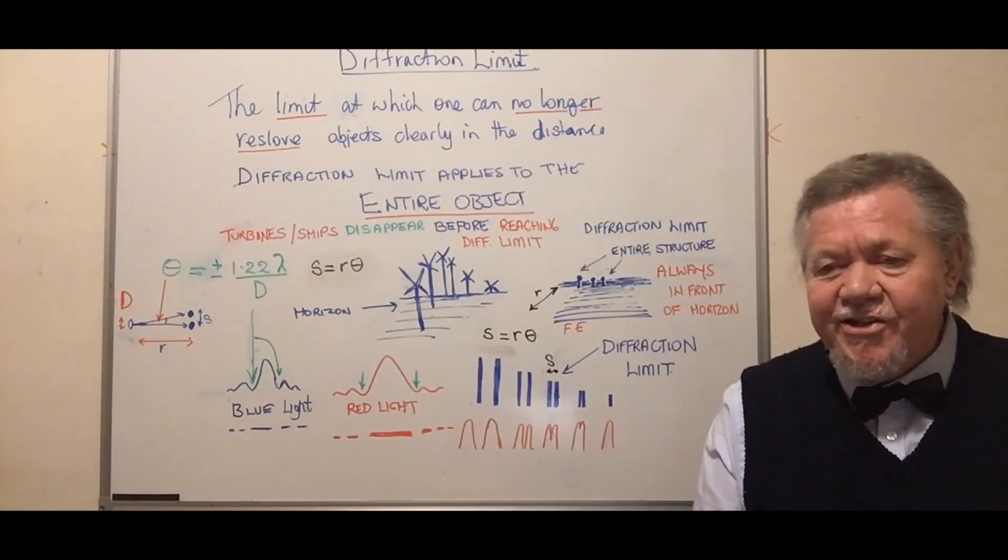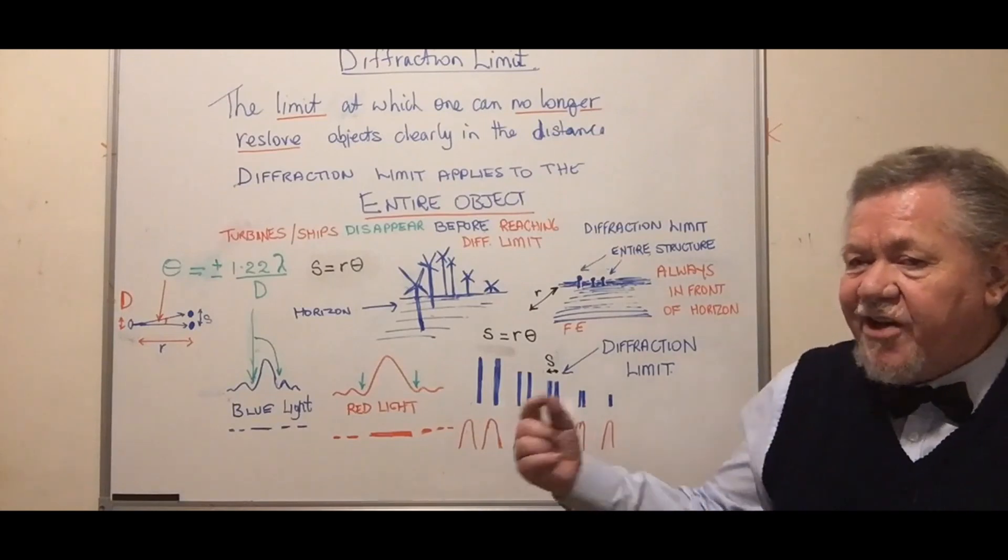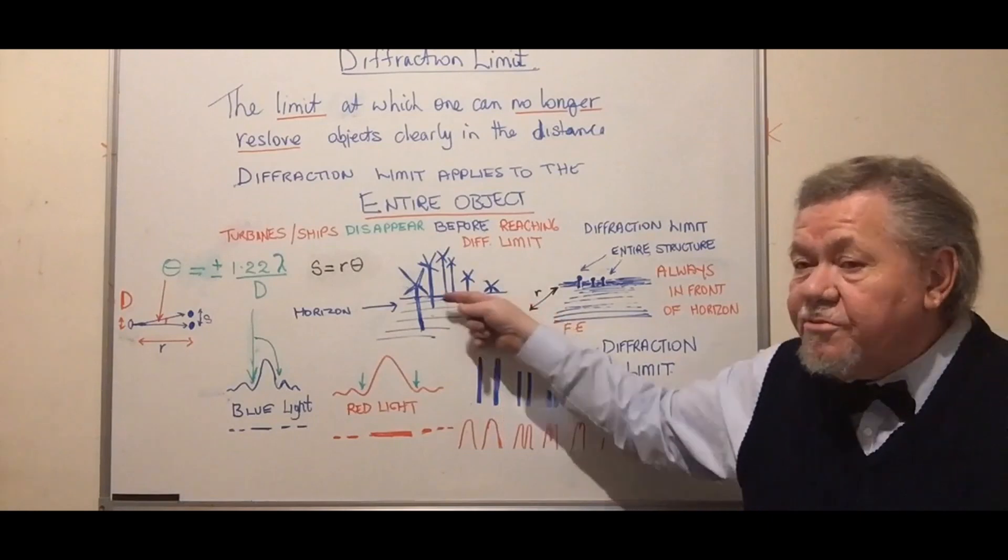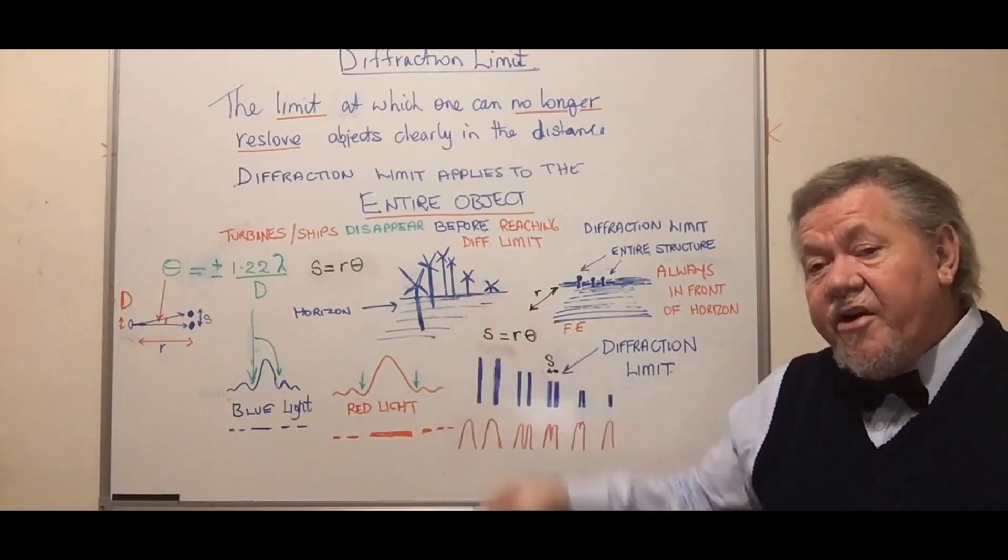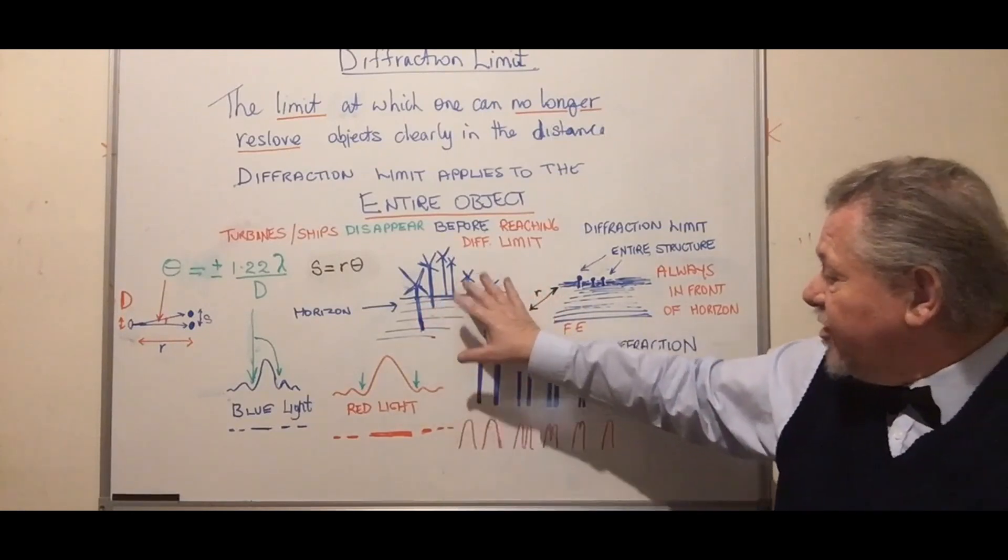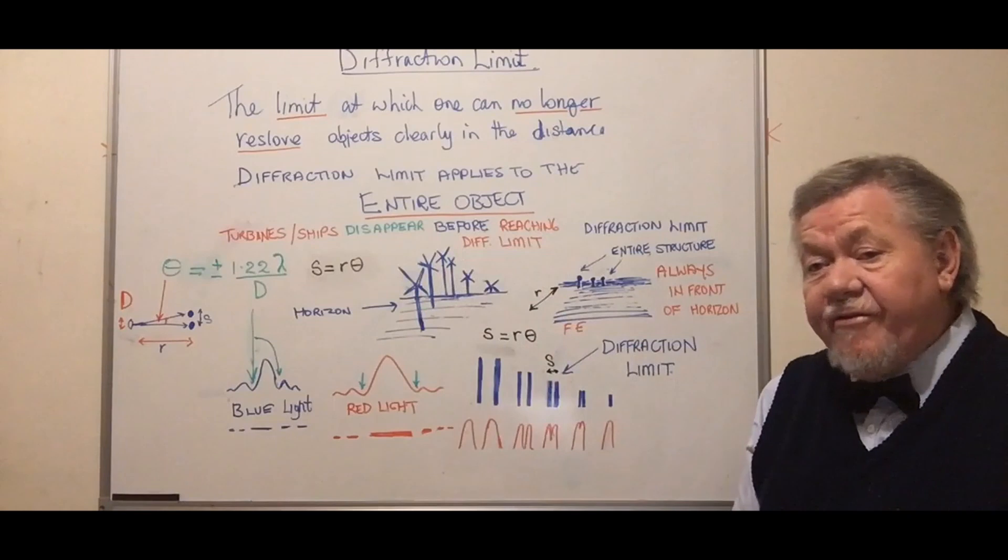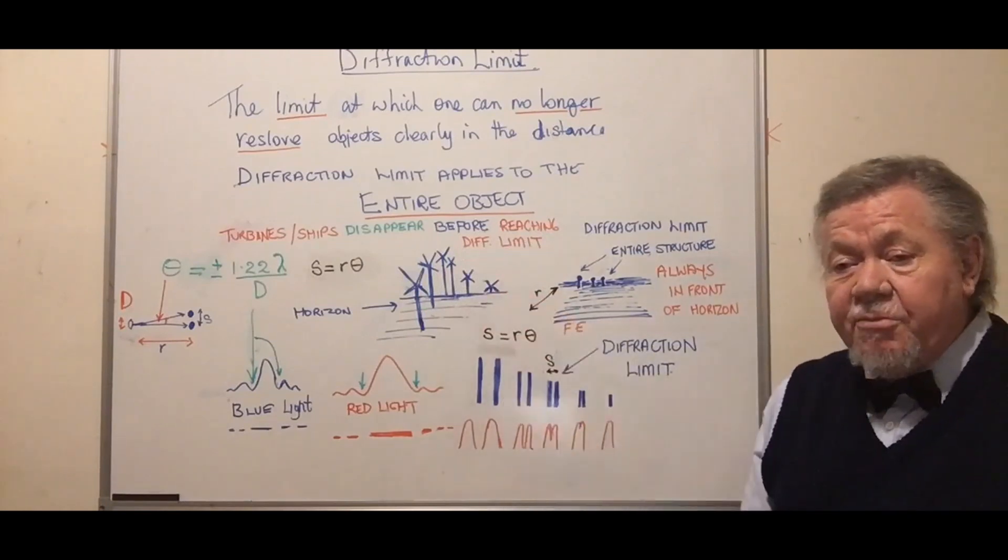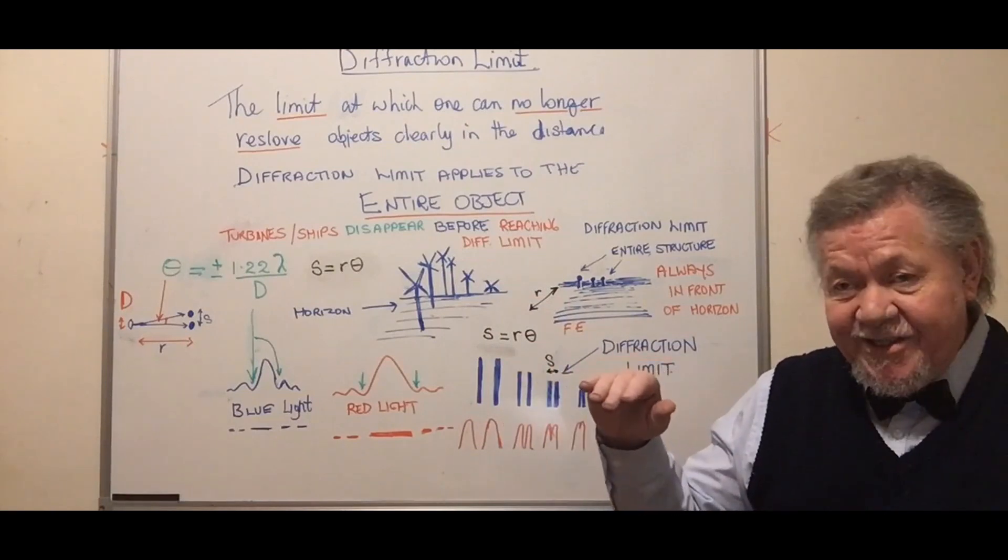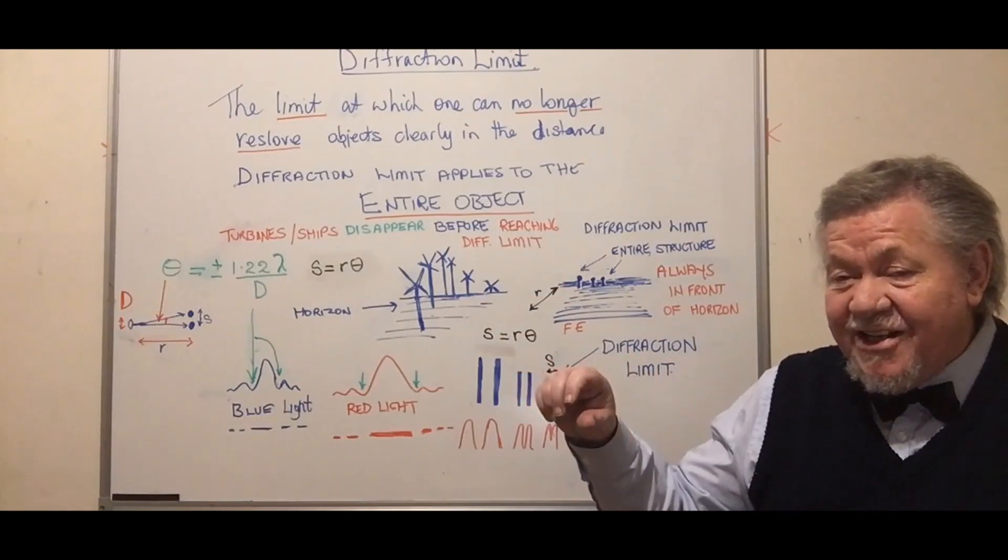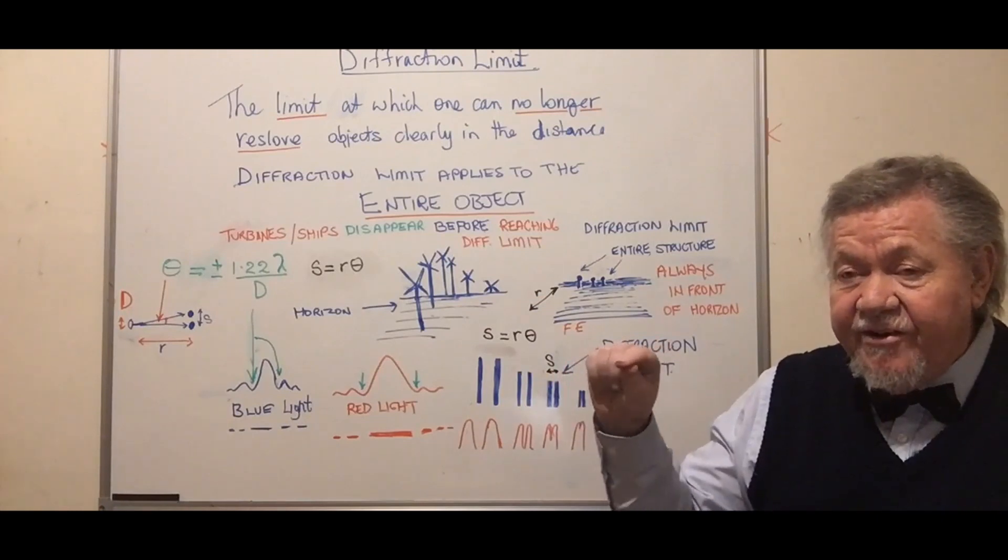This is one key thing that makes what Nathan says wrong. Nathan claims diffraction limit only applies to the bottom of objects. But clearly we can see the wind turbines very nicely - all of it, the tops. It's only the ones behind the horizon where we can't see half of them. In some cases we only see the blades, but they're still clearly visible as blades, not coming together like you'd expect with diffraction limit.